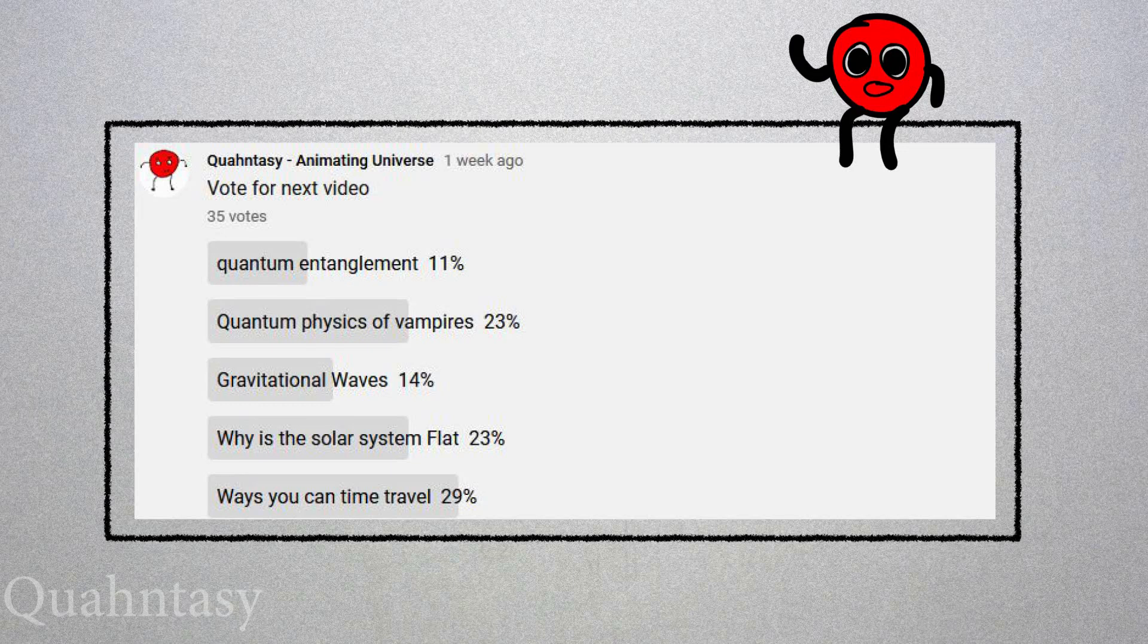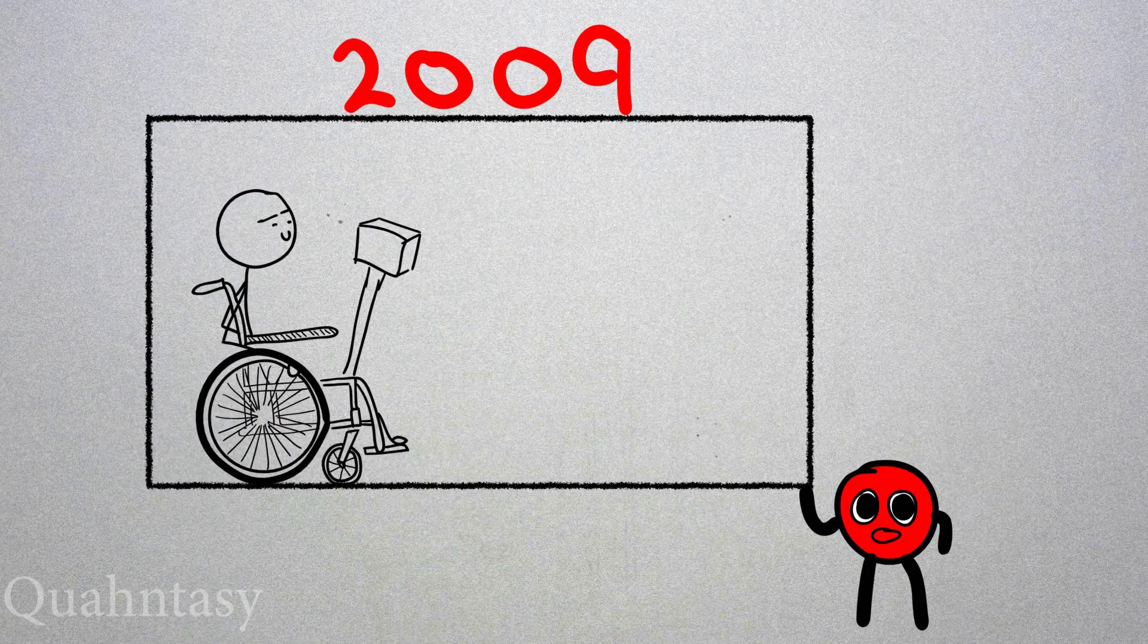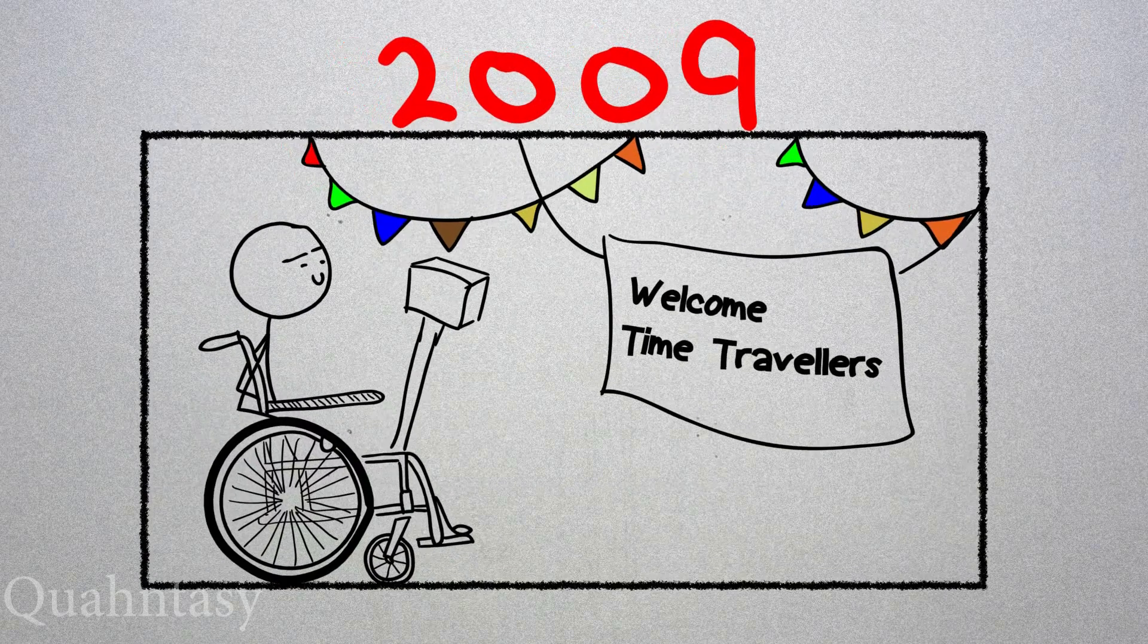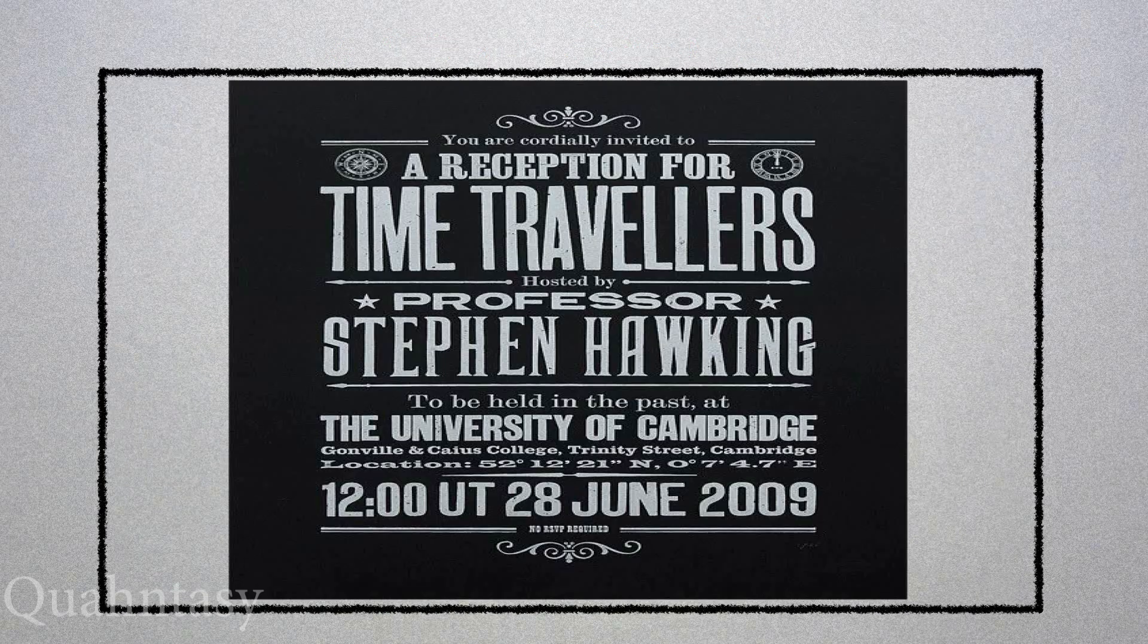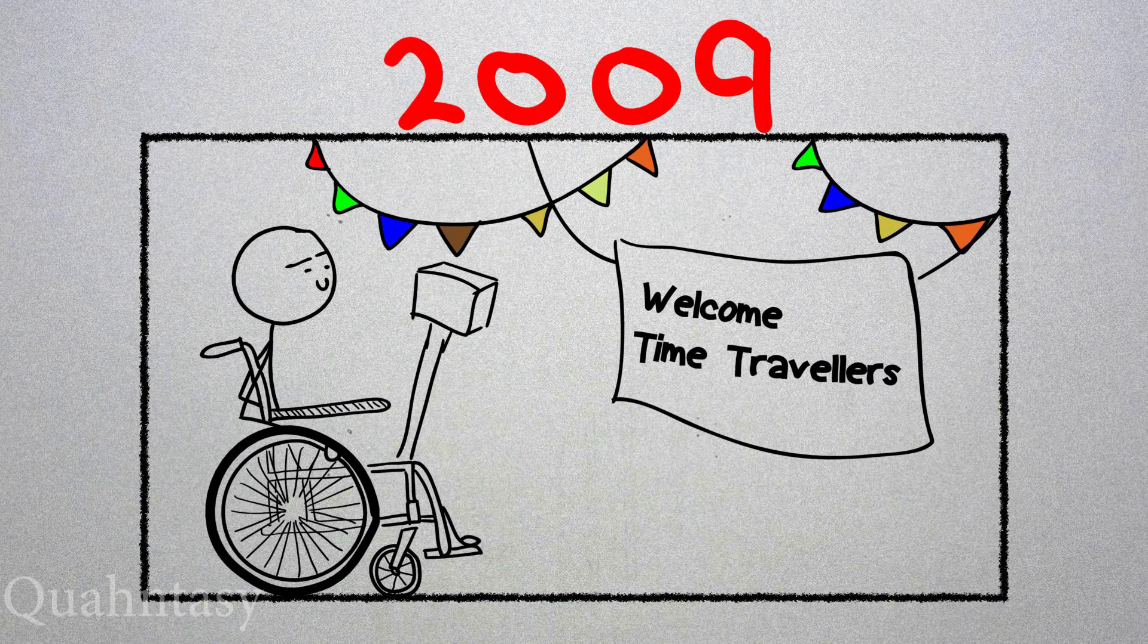29% of you guys voted for this, so here we are. In 2009, Stephen Hawking held a party for time travelers. But here's the twist—he sent out the invites a year later. And guess what? No one showed up.